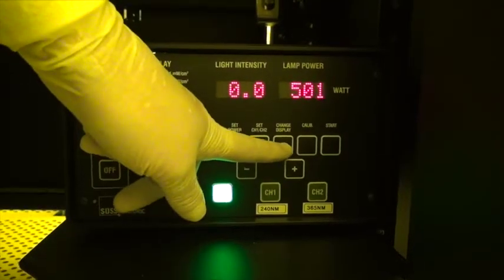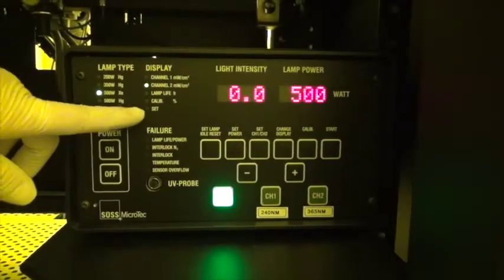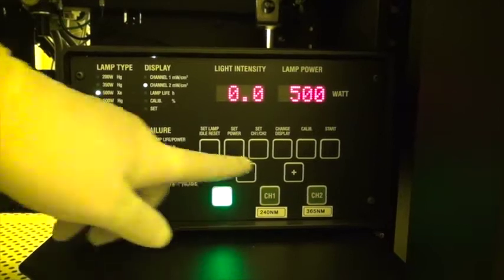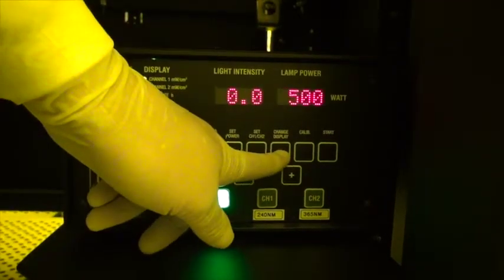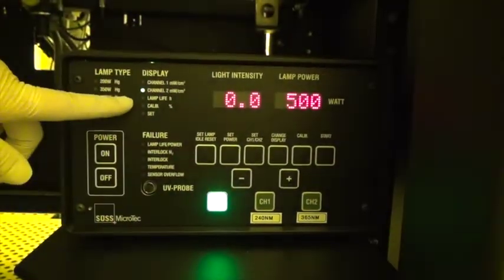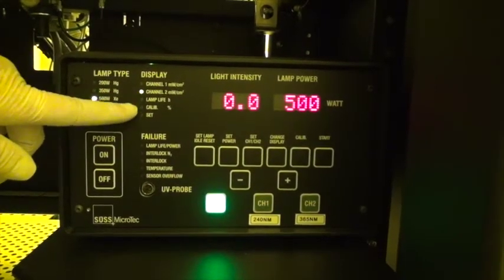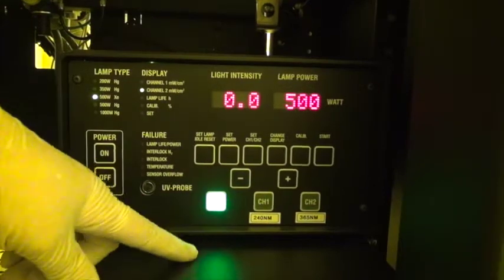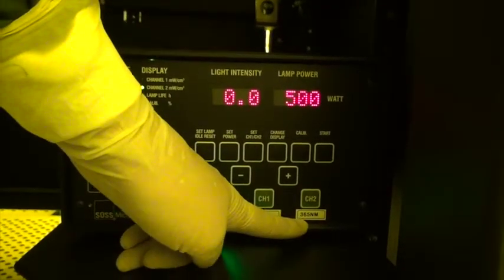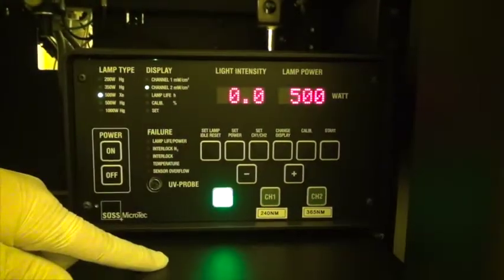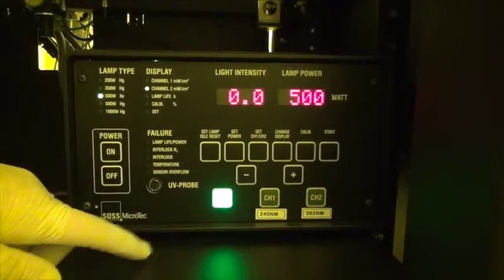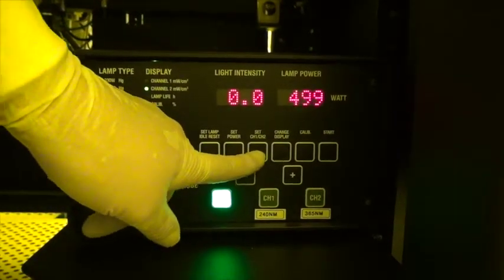Then we use the change display button to make sure that we have selected channel 2. So if I press change display we can cycle through to channel 2. Because channel 2 is the one we want to use. That is the intensity measured at 365 nanometers as indicated here. So once we have channel 2 selected we can press set CH1 CH2.